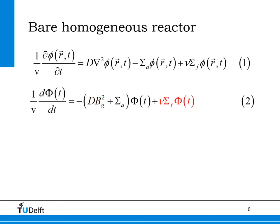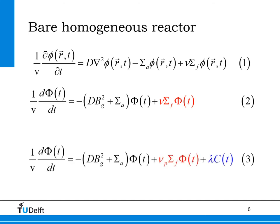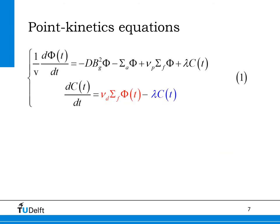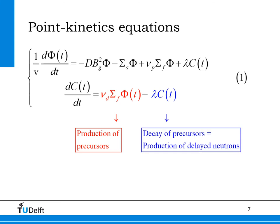Now we must realize that the production of neutrons in a fission process consists of the prompt neutrons released promptly at the fission event and the decay of precursor atoms. The prompt neutron production rate equals nu_p times the macroscopic fission cross-section times the total neutron flux, shown in red in equation 3. Each precursor atom releases one delayed neutron upon decay, shown in blue in equation 3. We need an additional equation to evaluate the number of precursor atoms in the reactor core as a function of time, where the red term describes the production of precursor atoms proportional to the fission rate, and the blue term describes the removal of precursor atoms due to decay.